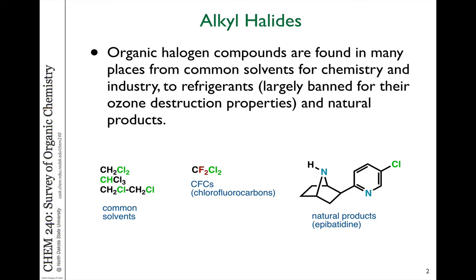Other compounds, such as the compound on the right shown on this slide, epibatidine, is a natural compound isolated from an Ecuadorian tree frog. This compound contains a chlorine atom, which does occur naturally. A lot of people think that halogenated compounds are only unnatural and dangerous, when in fact they can be used for medicines and are found in many natural sources, particularly marine sources, because the oceans contain quite a bit of halogens — chloride, for example.